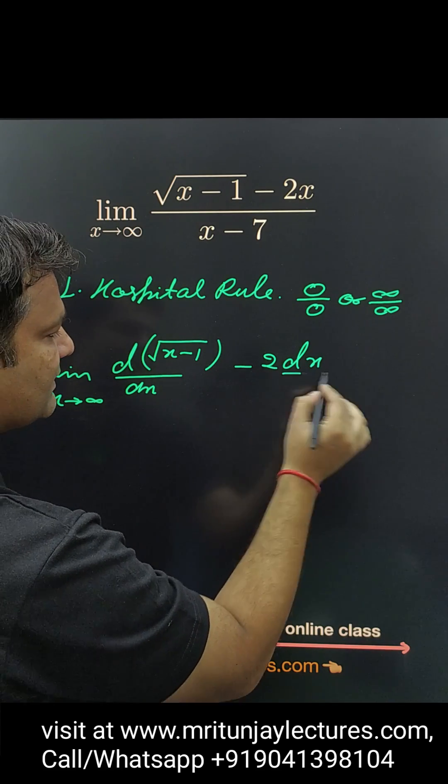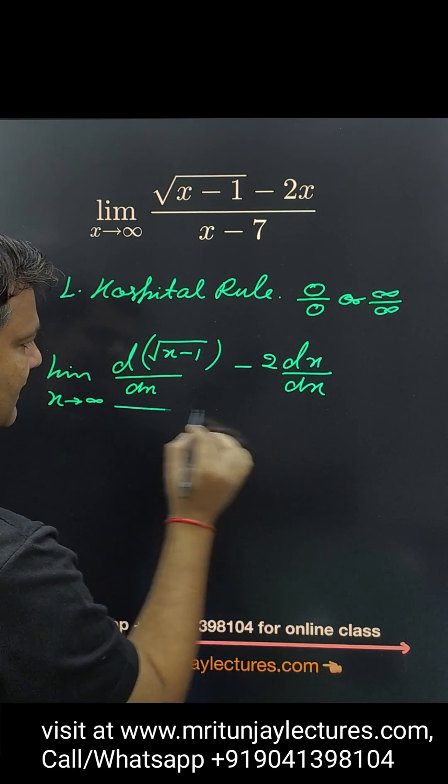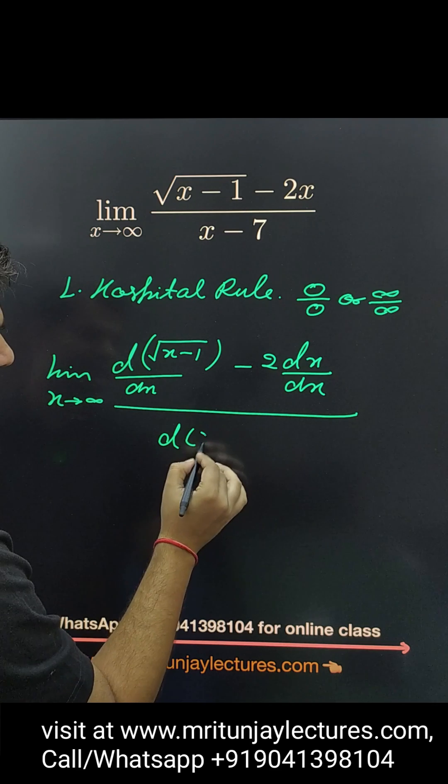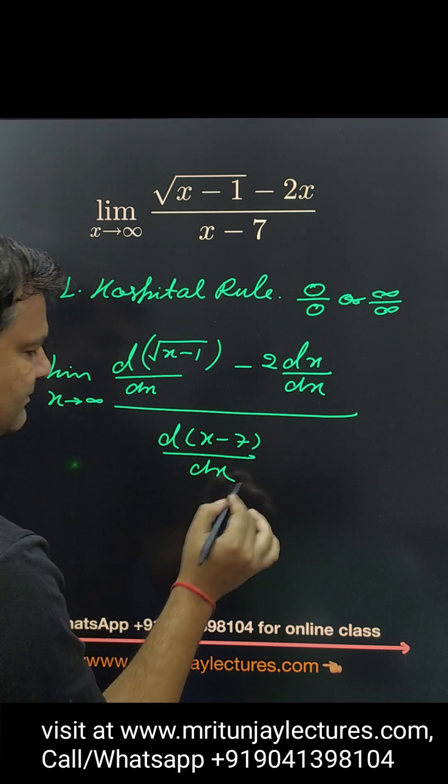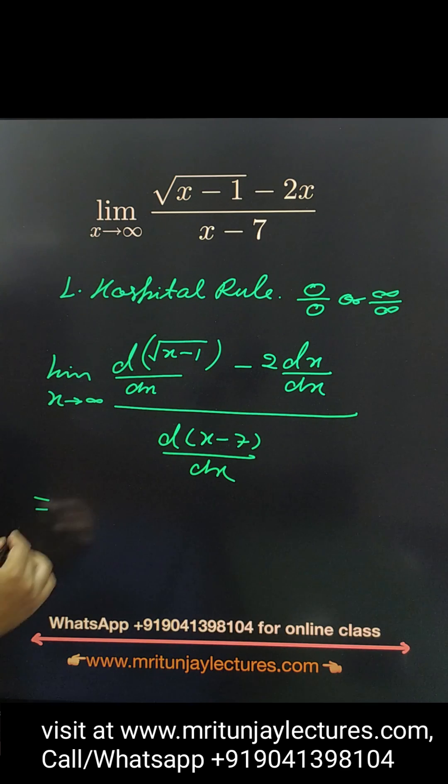Minus 2 into dx by dx divided by x minus 7 with respect to x. Now, what about that value?